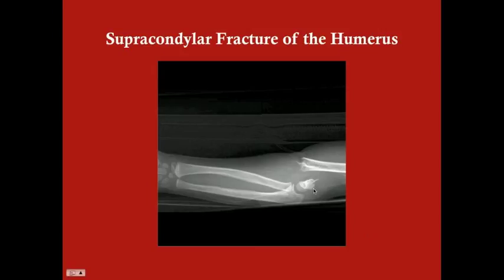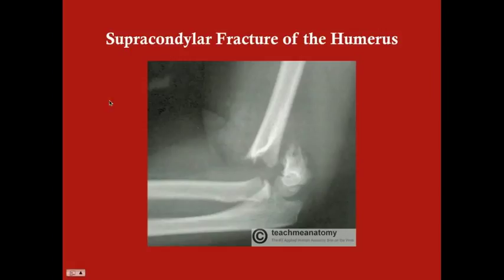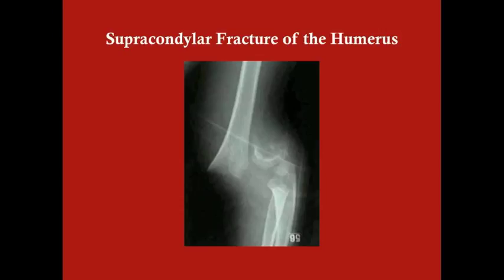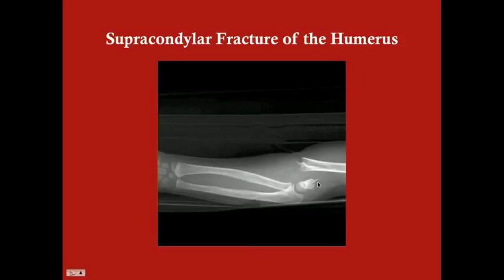This x-ray shows a supracondylar fracture of the humerus. You can see the humerus and the point where it broke — the bone edge can be very sharp and could easily cut through nerves or arteries on contact. Here are a couple more x-rays — some more and some less displaced. What you're looking for on x-ray is a break where the epicondyles remain in articulation with the forearm while the rest of the humerus is detached from the epicondyles.